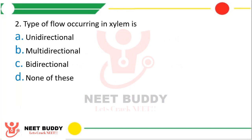Question 2: Type of flow occurring in xylem is — option A: unidirectional, option B: multi-directional, option C: bi-directional, option D: none of these. The correct answer is option A, unidirectional. Most of the time the flow in xylem is unidirectional, that is from the roots where the water is absorbed to various leaves, stems, and other parts of the body where water is utilized.